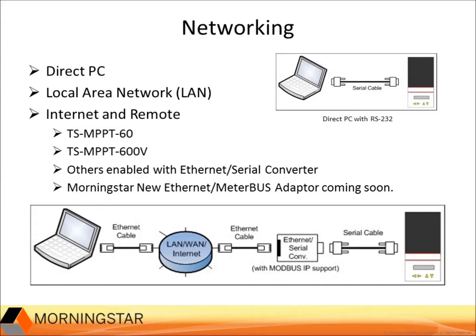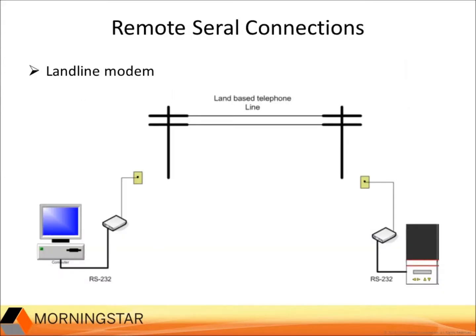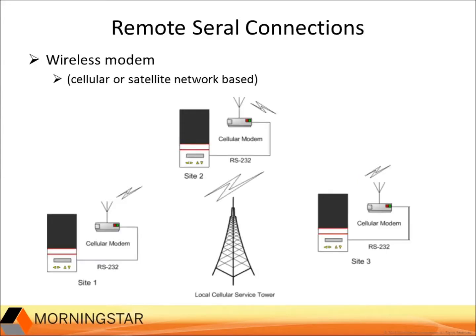It is only possible to connect to the internet using an Ethernet TCP/IP interface. Remote serial connections are possible, but they are basically direct serial connections rather than routed internet connections. Here is an example of a remote serial connection using a landline. It is also possible to use cellular or satellite wireless communications for remote serial communications.